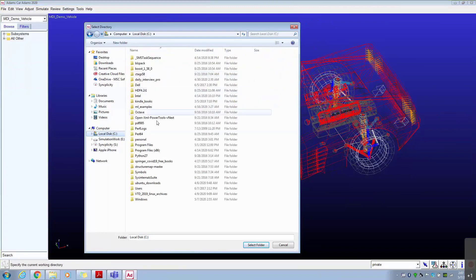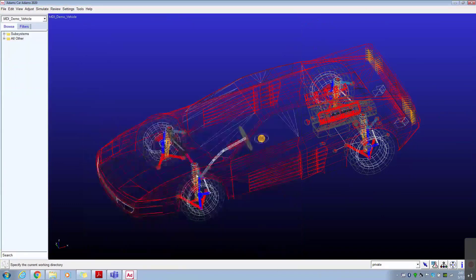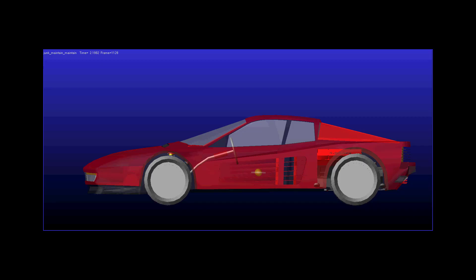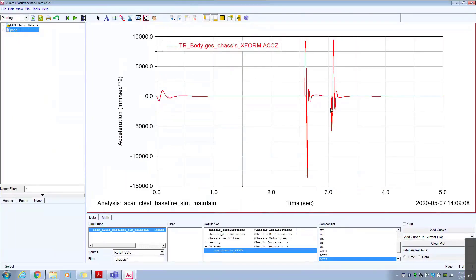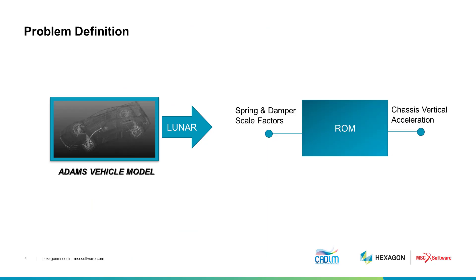We'll simulate the vehicle using the straight line maintain vehicle event. The output response for the vertical acceleration shows the chassis vertical acceleration during front and rear impact. The goal is to create a reduced order model that predicts this transient vehicle acceleration response for different levels of spring and damper scale factors. The spring and damper scale factors will be the input to the reduced order model and the transient chassis vertical acceleration will be the output.